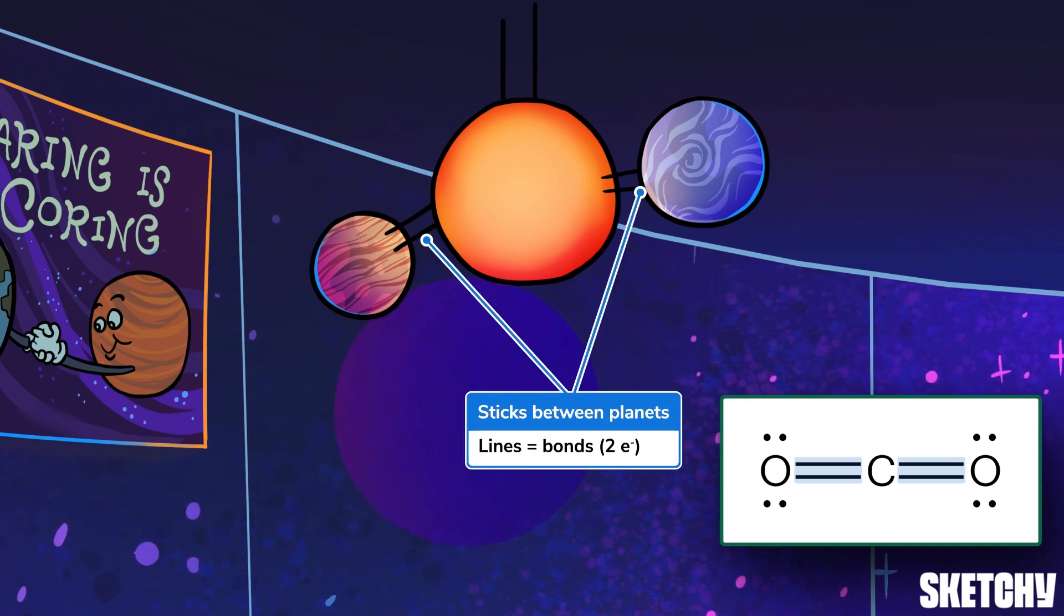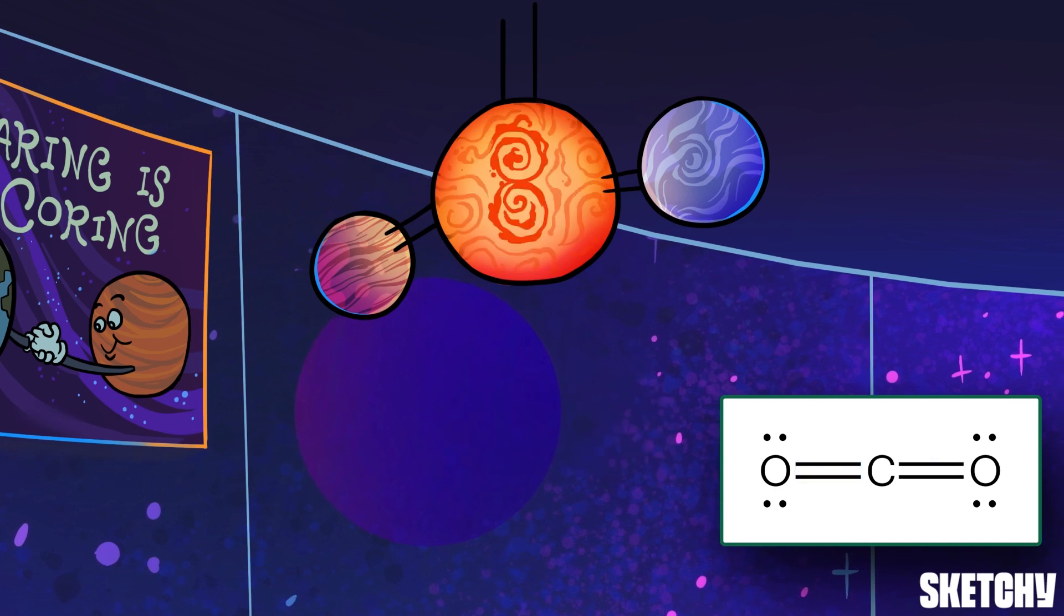So one line represents two electrons. Atoms share electrons to fill out their outer electron shell, which is called a valence shell.